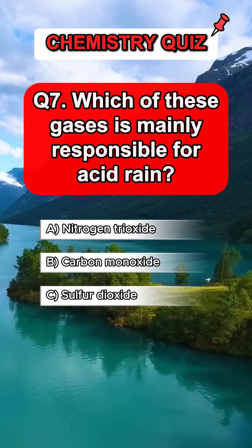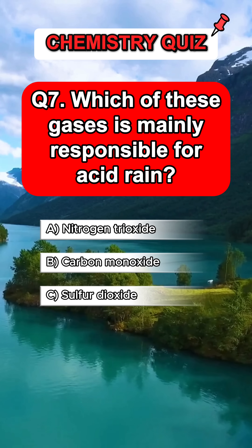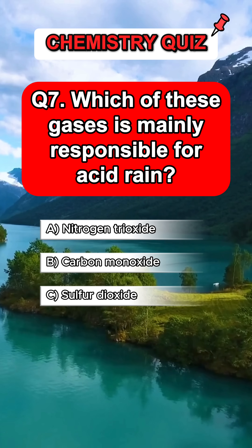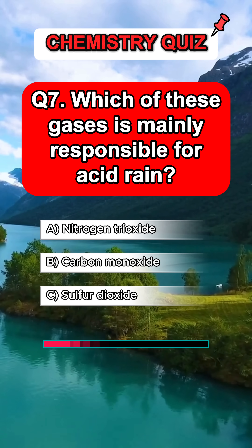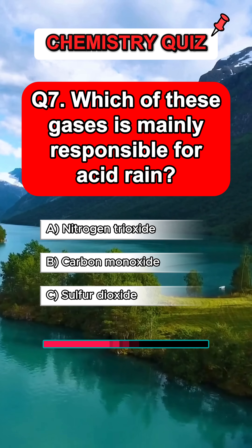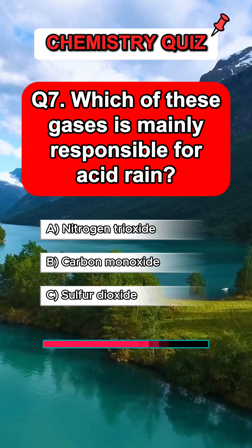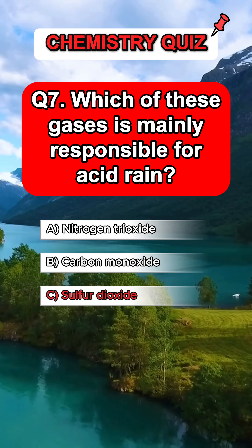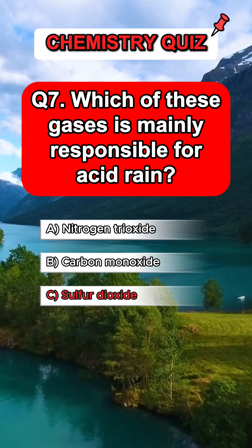Question 7. Which of these gases is mainly responsible for acid rain? Answer C. Sulfur dioxide.